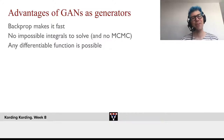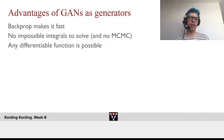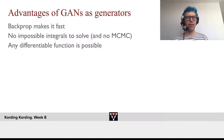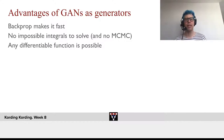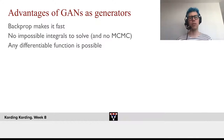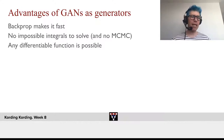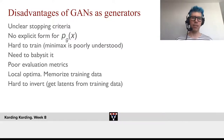So now let's wrap up for today. What are the advantages of GANs as generators? Backprop makes them fast. It doesn't produce integrals that are impossible to solve. And you don't need to use Markov chain Monte Carlo, which is often very inefficient. And you can use any differentiable function for generating images.